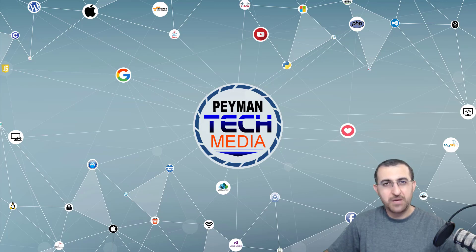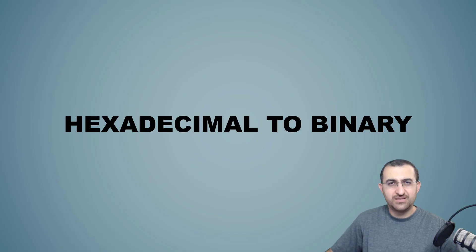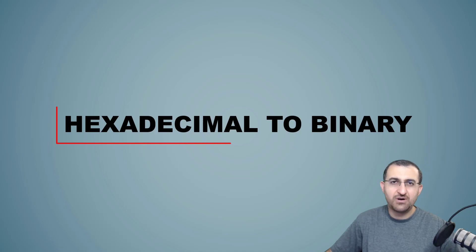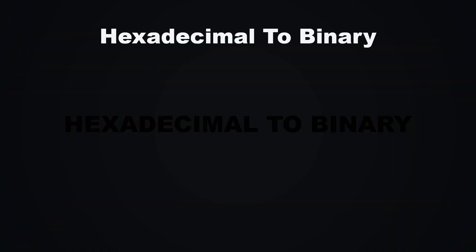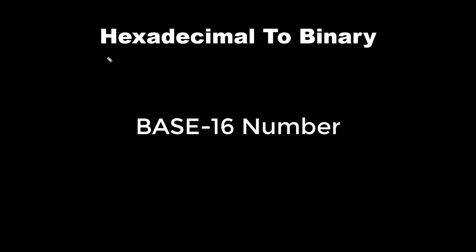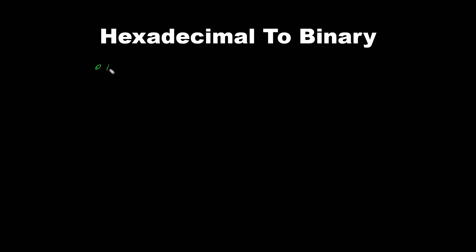Hello everyone, welcome to Payment Tech Media. In this video you are going to learn how to convert a hexadecimal number to a binary number. Hexadecimal is a base 16 number system and we have 0, 1, 2, 3, 4, 5.